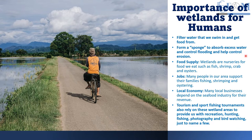Wetlands act as a sponge to absorb excess water, control floods, and help control erosion. They supply food — wetlands are nurseries for fish, shrimp, crab, and oysters. They create jobs, as many people support their families by fishing, shrimping, or oyster harvesting. They support local economies through the seafood industry, and tourism and sport fishing tournaments also rely on these wetland areas for recreational hunting, fishing, photography, and bird watching.